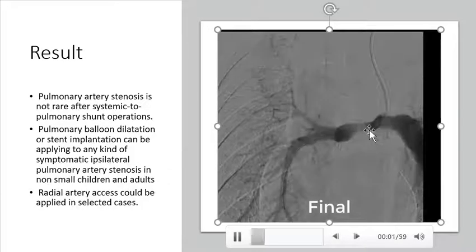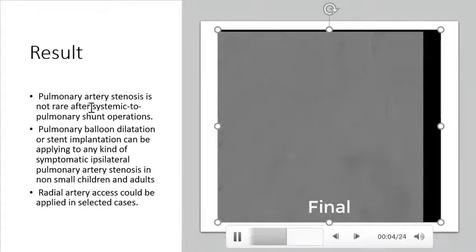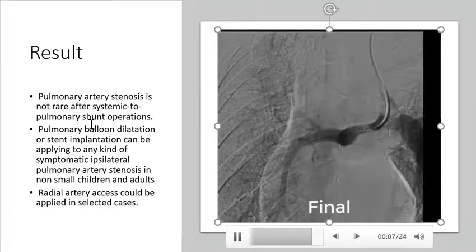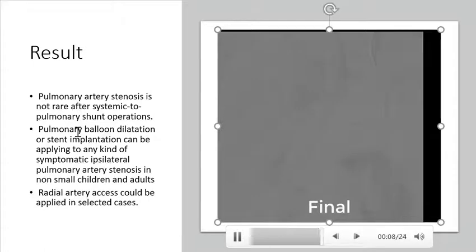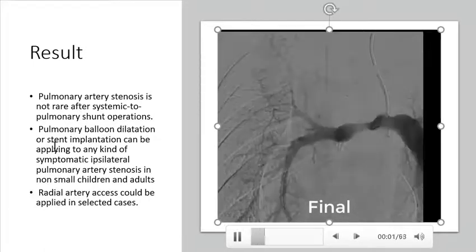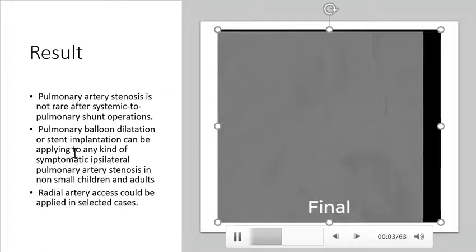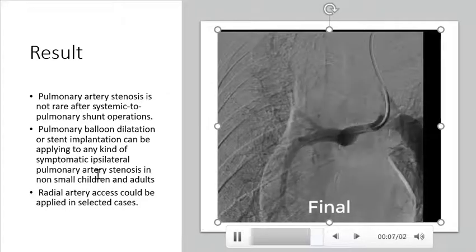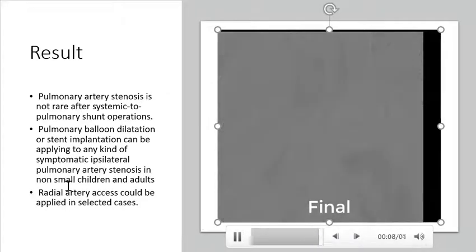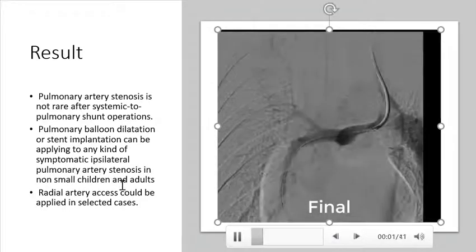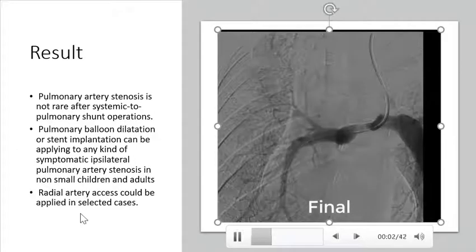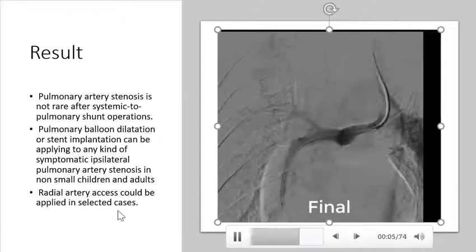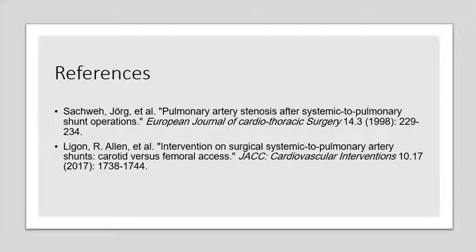You can see the final result. Pulmonary artery stenosis is not rare after systemic to pulmonary shunt operations. Pulmonary balloon dilation or stent implantation can be applied to any kind of symptomatic ipsilateral pulmonary artery stenosis in non-small children and adults. In addition, radial artery access could be applied in selected cases. Thanks for watching.